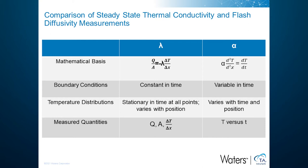Third, the temperature distribution is stationary versus time at all positions in the steady-state method, but it varies versus time and position in the flash diffusivity method. Fourth, the measured quantities in the steady-state method are heat flow, cross area, sample thickness, and temperatures on the sample surfaces. In the case of high thermal conductivity materials, a tiny temperature drop across the sample causes large measurement errors. For the transient flash diffusivity method, a temperature change signal versus time on the rear surface of a small sample is recorded in a very short time, benefiting measurement across a wide thermal conductivity and temperature range.